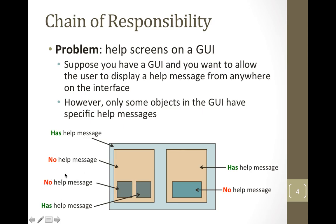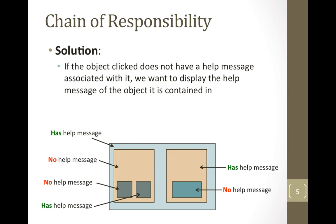However, some of these objects may not have a help message. Rather than have the user click one of these objects and have nothing display, we would prefer some kind of useful help message to display. The solution is: whenever you click an object that doesn't have the help message hard-coded into it, go one step outwards and try to display the help message of that outer object.